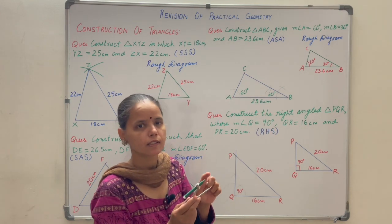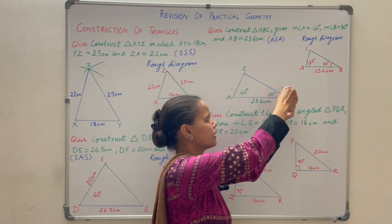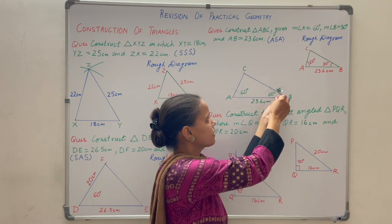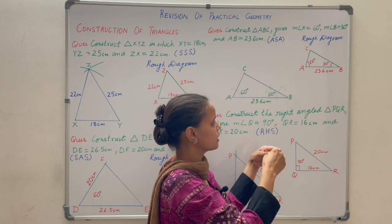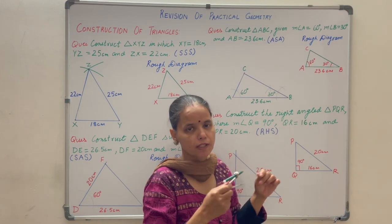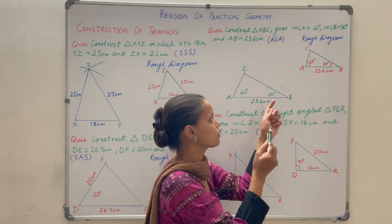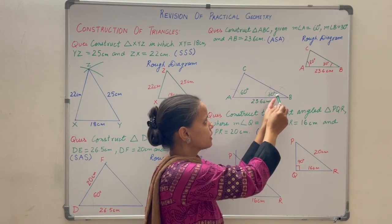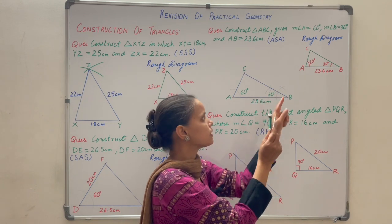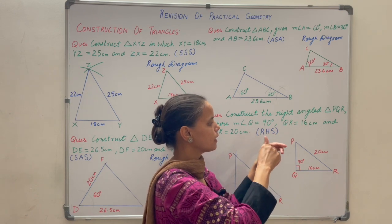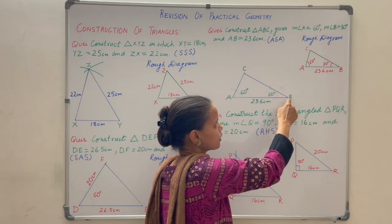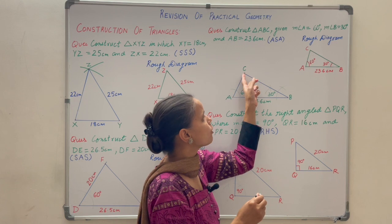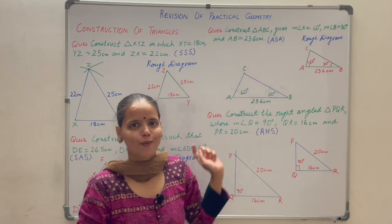To bisect the 60-degree angle at B, take a radius more than half of the arc length; keep the compass needle at each arc intersection point and make arcs that intersect each other. Join this intersection to B and extend the line until it meets the arm of the 60-degree angle at A. That meeting point is C. Triangle ABC is the required triangle.